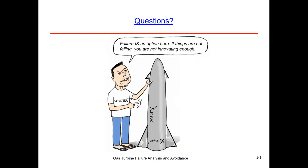Elon Musk once said: 'Failure is an option here — if things are not failing, you're not innovating enough.' He was talking about SpaceX. That's kind of an interesting way to look at it; we typically don't look at it like that in the power or the flight industry.